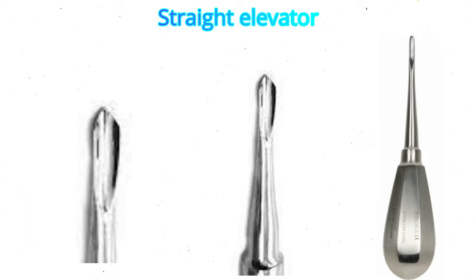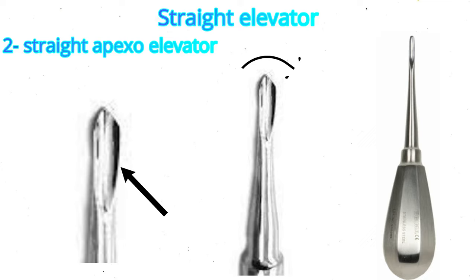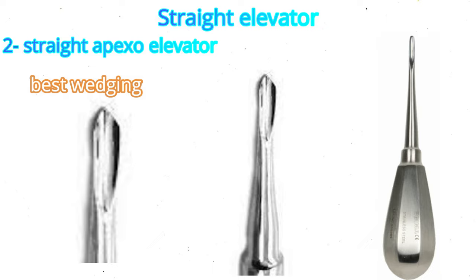The second type is the straight apexo elevator, which has a rounded but more pointed tip and a smooth inner concave surface with no serrations. This one provides the best wedging due to the more pointed tip and narrow circumference. It uses levering and wedging principles, but mainly wedging.